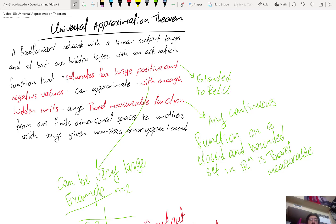We'll come back later to it from one finite dimensional space to another with any given non-zero error upper bound. So what that means is the following. You give me any function and you give me any error upper bound. So you tell me I want to approximate this function with an upper bound of 10%, 5%, 1%, any value.